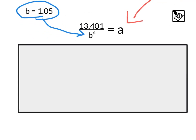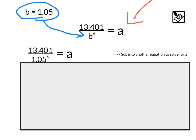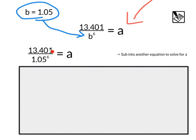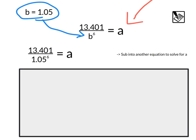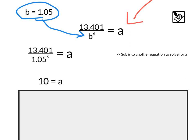And we can just take this b value that we found and substitute that right in for that b to the sixth in the denominator. Doing that, we will end up getting 13.401 divided by 1.05, that's our b to the sixth, substituting that in equals a. And doing some of our calculator work, we can do 13.401 divided by 1.05 to the sixth power. And finally, get an a value of 10.